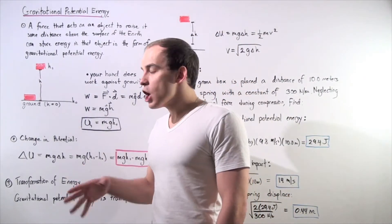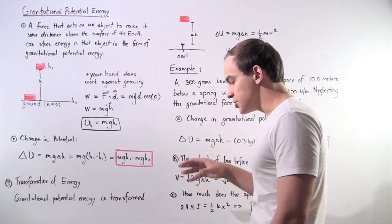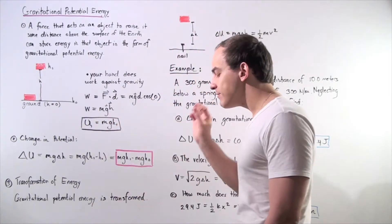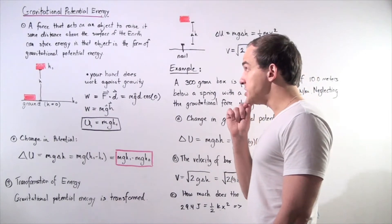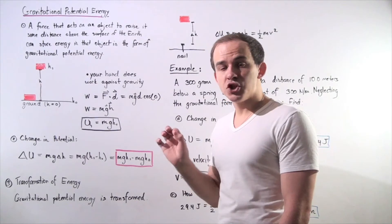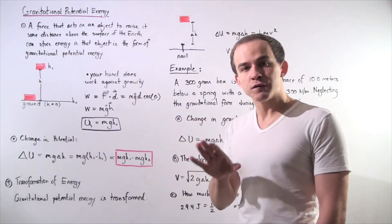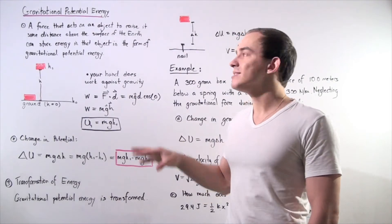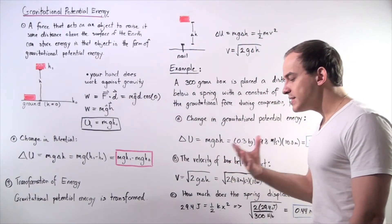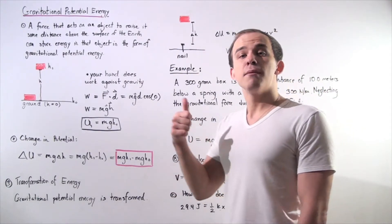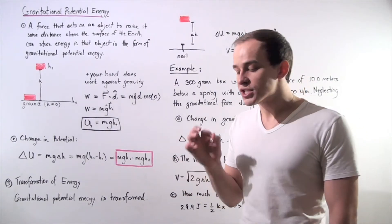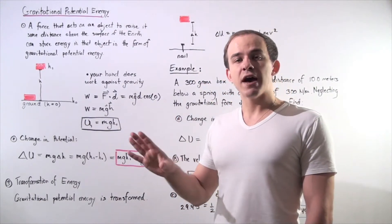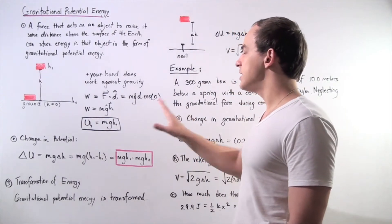A different form of energy exists known as gravitational potential energy. Different forms of potential energy exist, but in this lecture we're going to focus primarily on gravitational potential energy. Gravitational potential energy depends on the mass of the object, the gravitational constant resulting from the gravitational pull of the Earth on the object, as well as the change in displacement or change in position of that object.